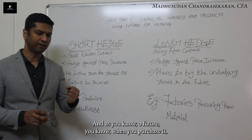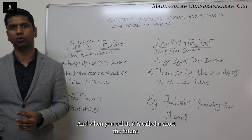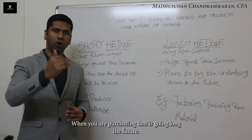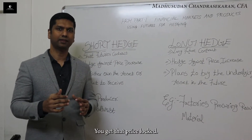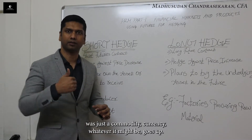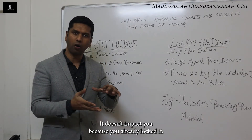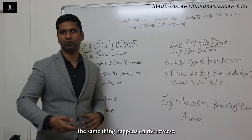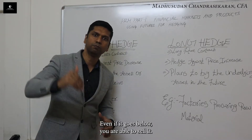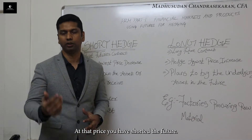A future — when you purchase it, we call it going long the future. And when you sell it, it is called a short future. When you are going long the future, you get that price locked. So tomorrow, if the underlying commodity goes up, it doesn't impact you because you already locked it. The same thing happens in reverse: when you are shorting the future, you are locking the price. Even if it goes below, you are able to sell it at that price.